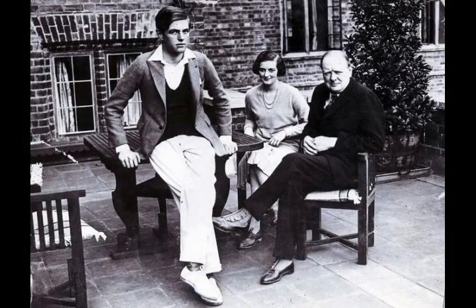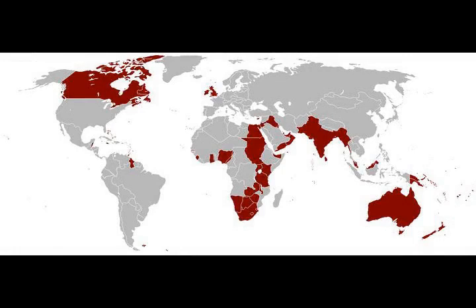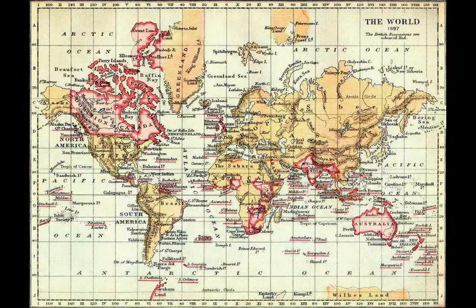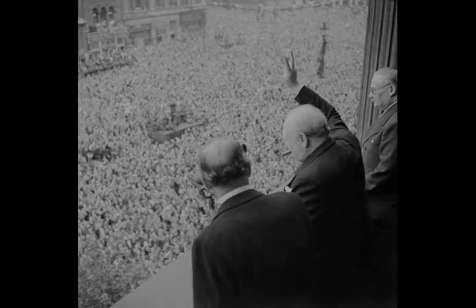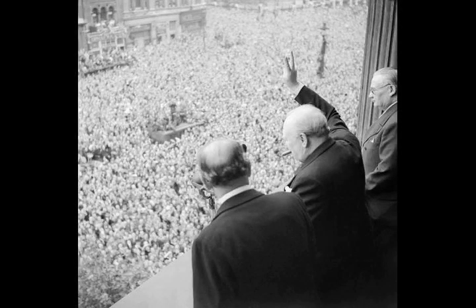In July, he agreed with Conservative leader Stanley Baldwin that he would be selected as a conservative candidate in the next general election, which was held on 29 October. Churchill stood at Epping, describing himself as a constitutionalist. The Conservatives were victorious and Baldwin formed the new government. Although Churchill had no background in finance or economics, Baldwin appointed him as Chancellor of the Exchequer.